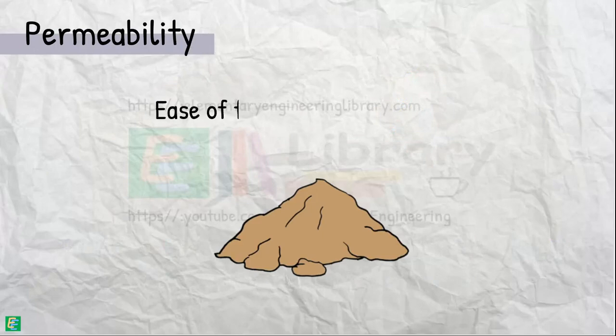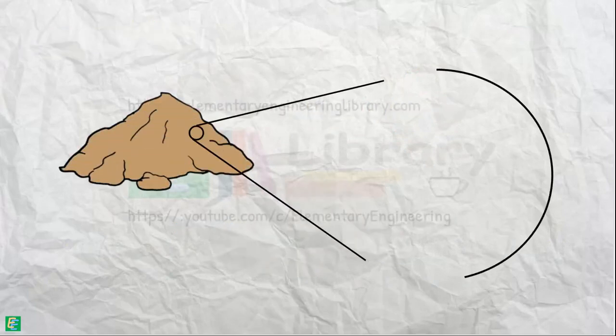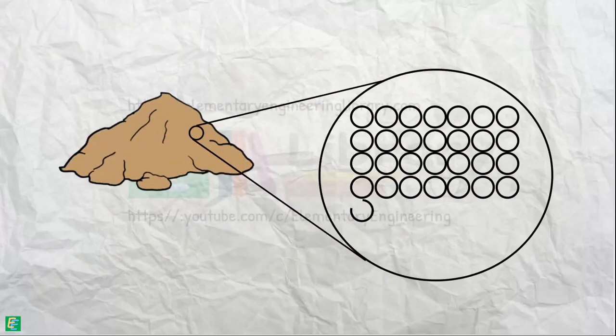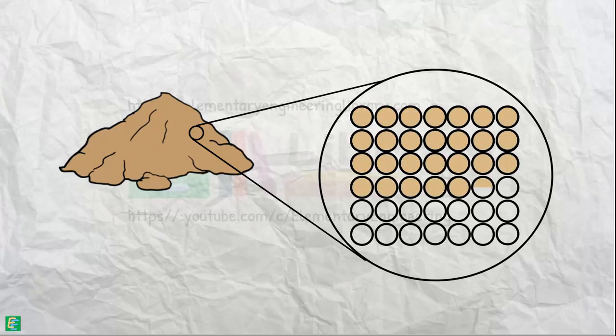Permeability is the ease with which water can flow through the soils. If soil consisted of perfectly spherical grains and if those grains are arranged perfectly in a particular fashion throughout the soil mass,